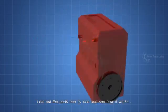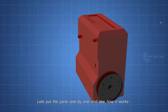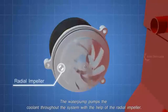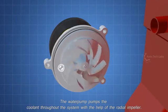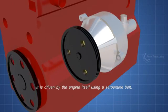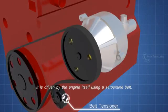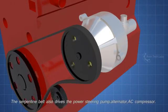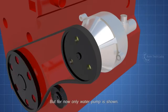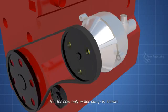Let's put the parts one by one and see how it works. The water pump pumps the coolant throughout the system with the help of the radial impeller. It is driven by the engine itself using a serpentine belt. The serpentine belt also drives the power steering pump, alternator, AC compressor. But for now only water pump is shown.